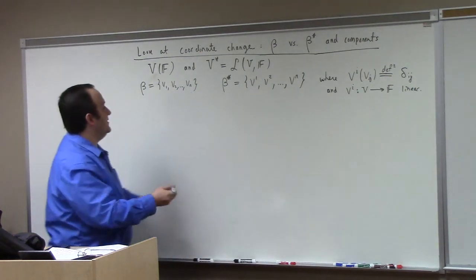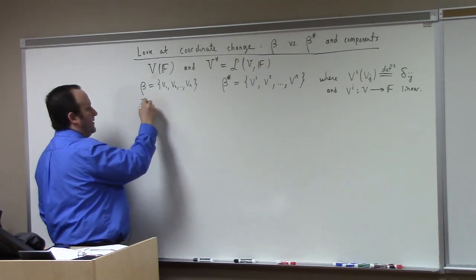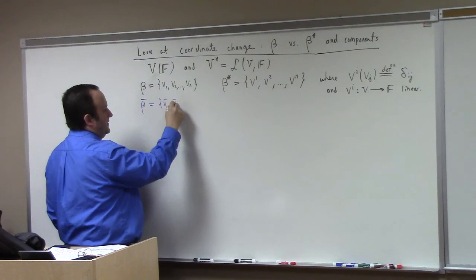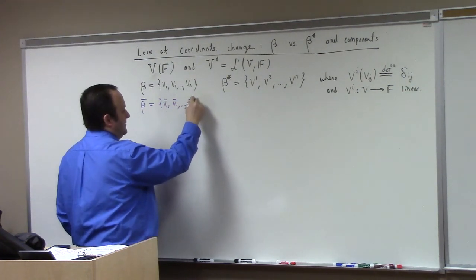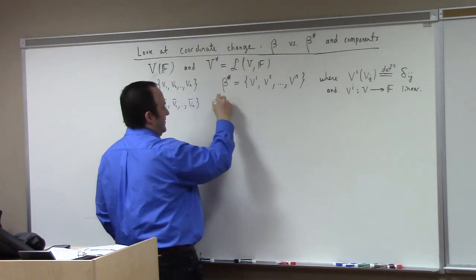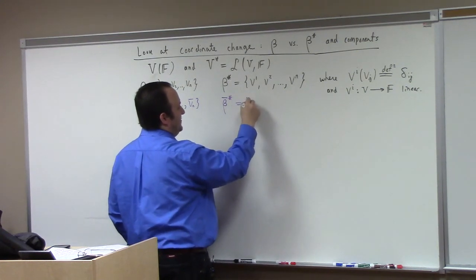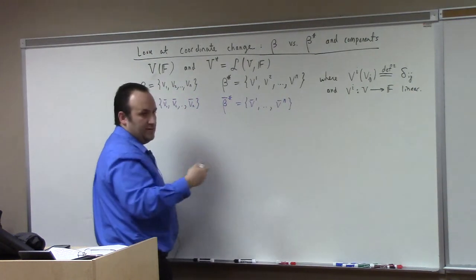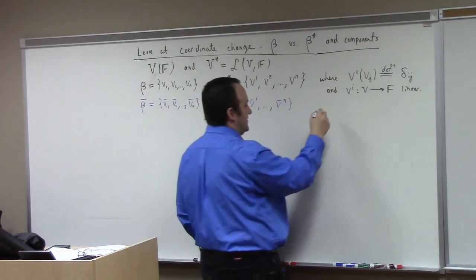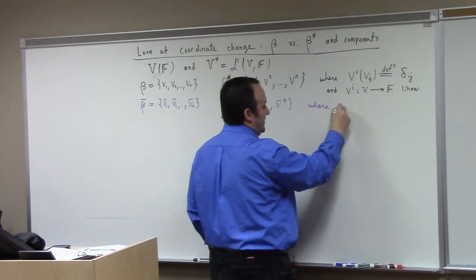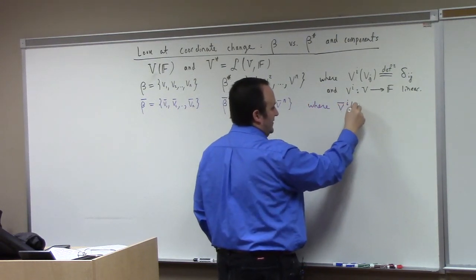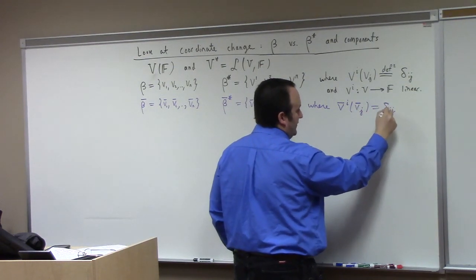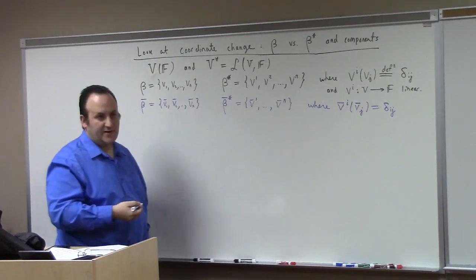How did we define these things? The definition: Vⁱ acting on Vⱼ was, by construction, the Kronecker delta δᵢⱼ, where Vⁱ is a linear mapping from V to F. So we linearly extend the dual basis off the basis. Now that I've reminded you of the rules of the game, let's look at coordinate change. We're going to introduce another basis — let's say beta-bar: V̄₁, V̄₂, ..., V̄ₙ — and it has dual basis beta-bar-star: V̄¹, ..., V̄ⁿ, defined the same way: V̄ⁱ acting on V̄ⱼ equals δᵢⱼ, extended linearly. The question then is how do these two different bases and dual bases interface?